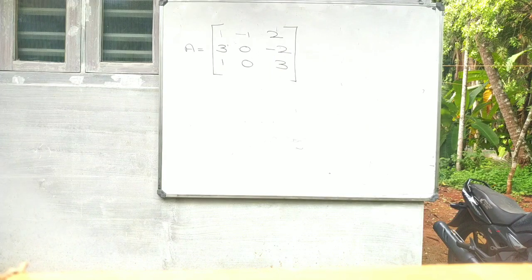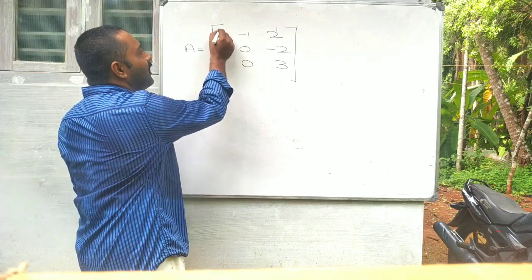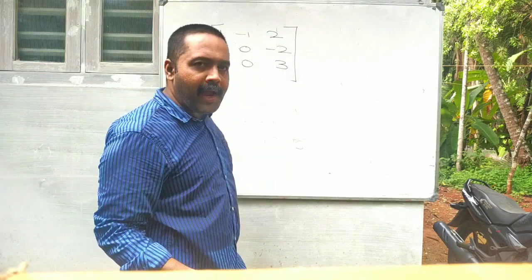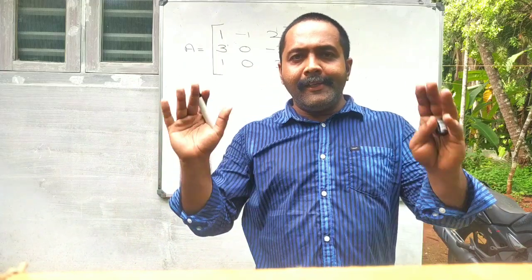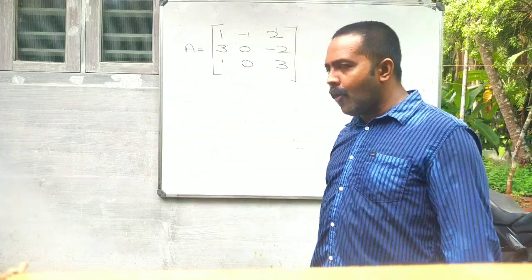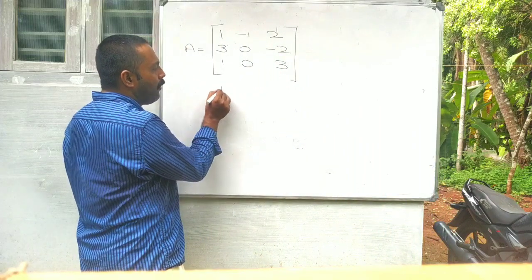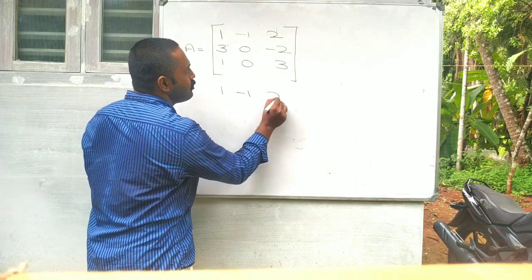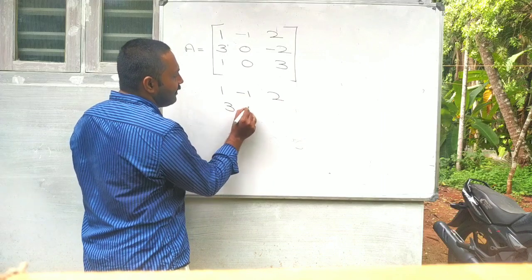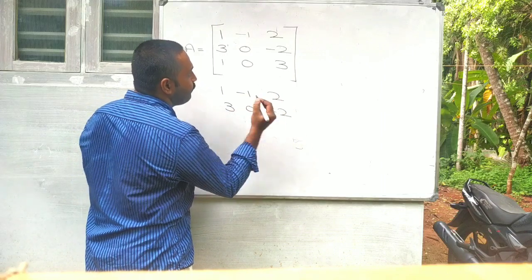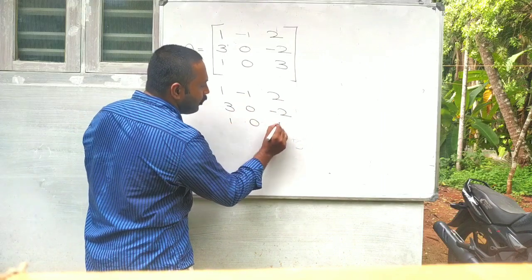Adjoint by shortcut today. Just a matrix copy. 1, minus 1, 2. 3, 0, minus 2. 1, 0, 3.